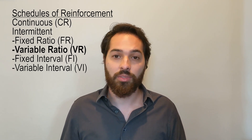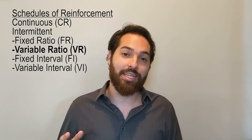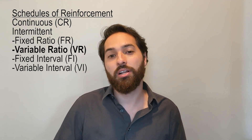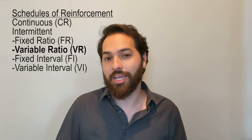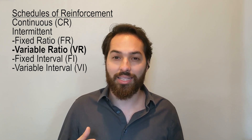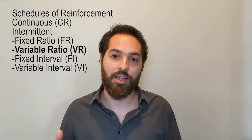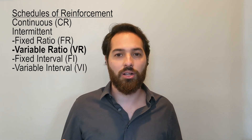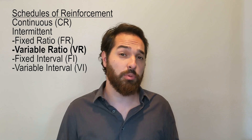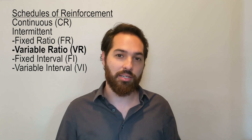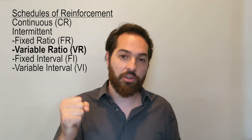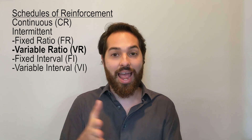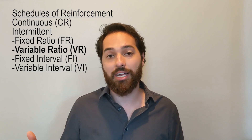Variable ratio is actually the schedule least prone to extinction — people engage in the behavior the strongest and it's hard to make them stop, which can lead to addiction. The classic example is slot machines in Las Vegas: they use a variable ratio schedule because you keep engaging hoping to hit the jackpot, but you don't know exactly when it's going to happen — it's just an average before you get the jackpot.